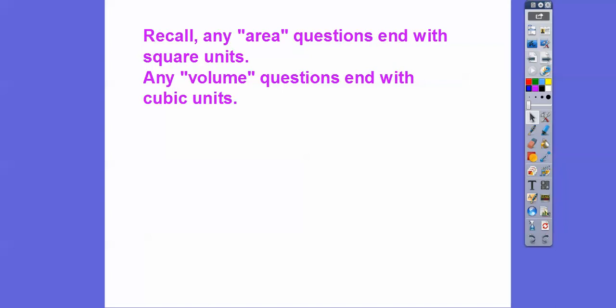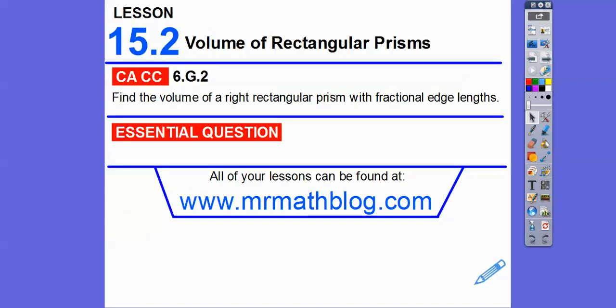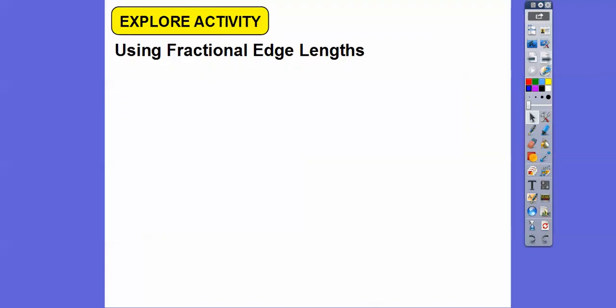Here, volume is always cubic units, so like meters cubed, feet cubed, inches cubed, or cubic centimeters, something like that. So here we go. Here's our question. How do we find the volume of rectangular prisms? And check this out right here. We're going to do fractional edges, so like 5 and a fourth, things like that.